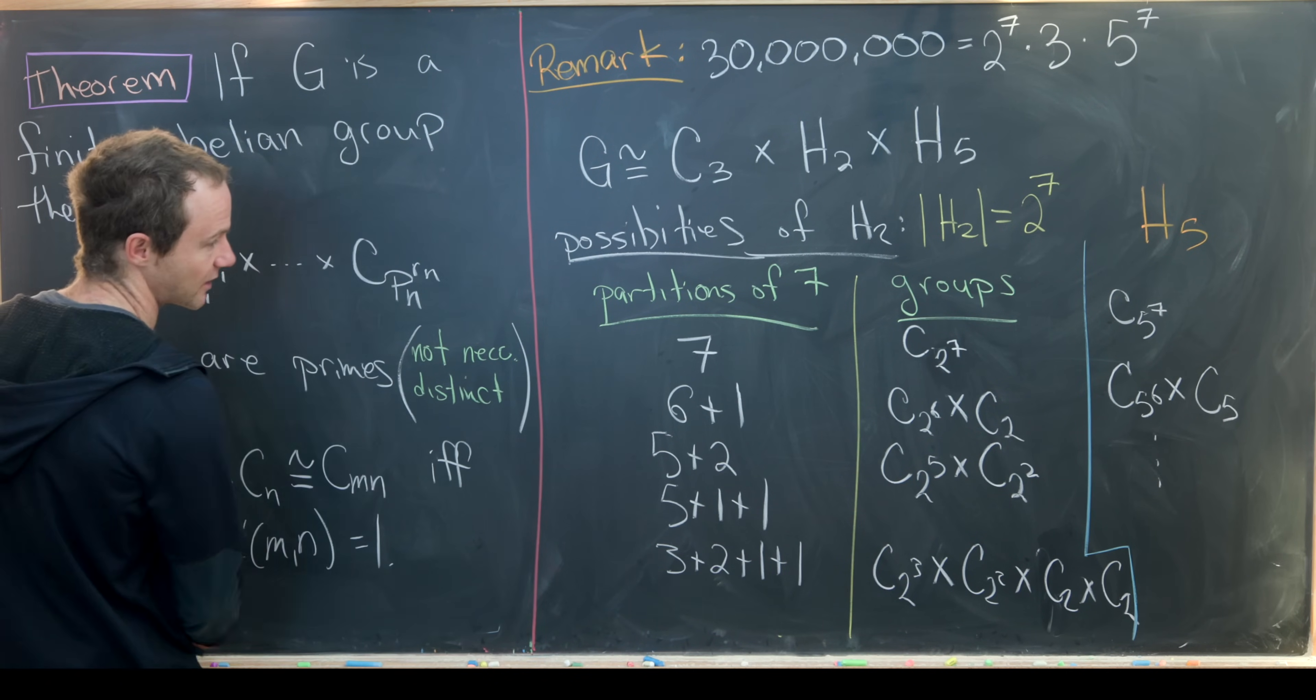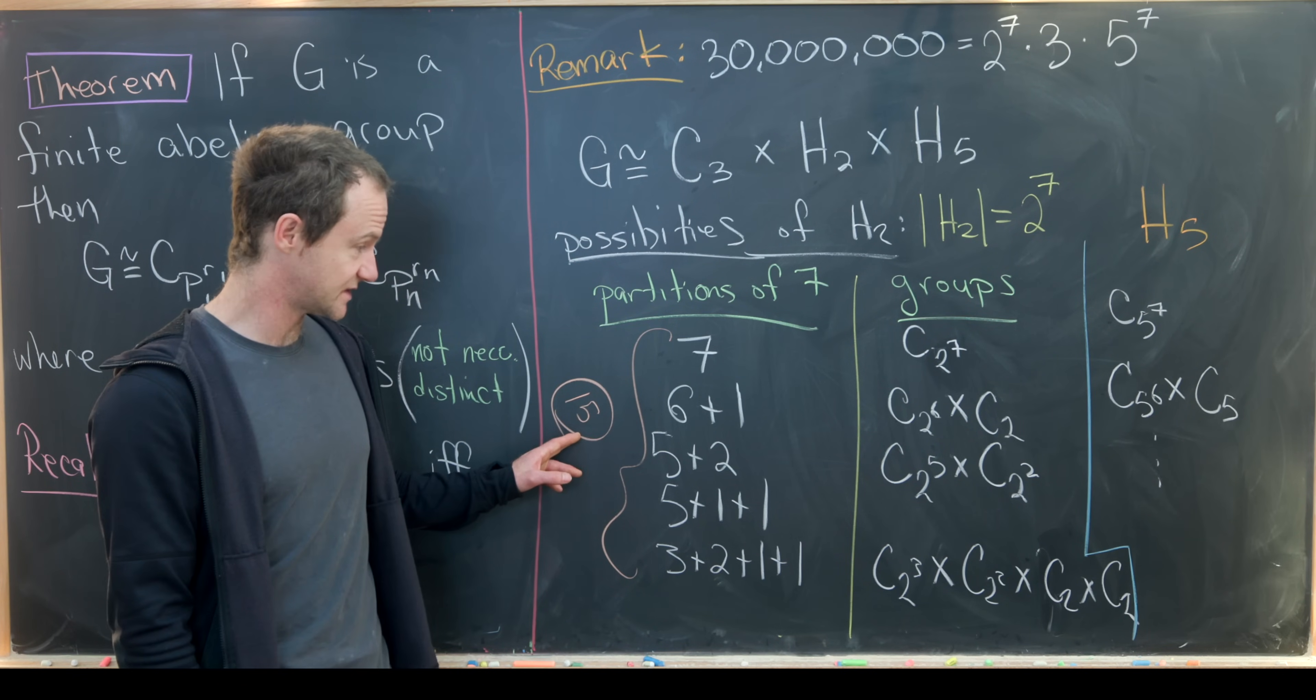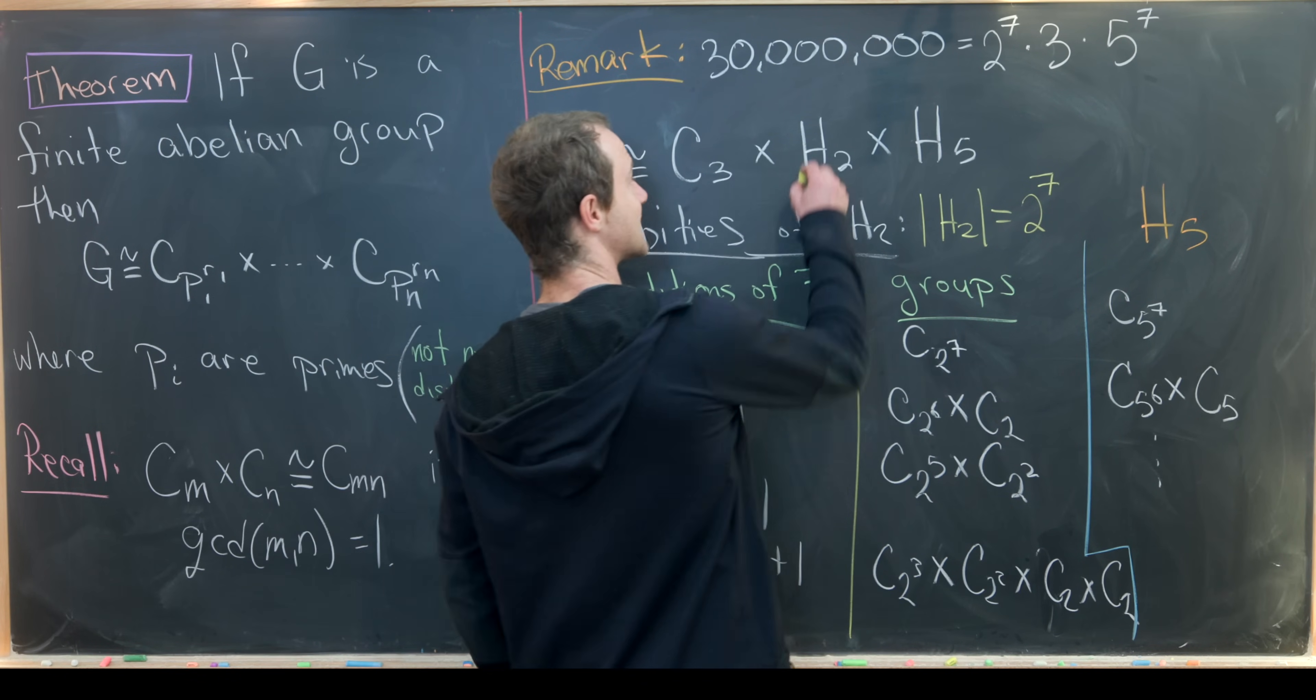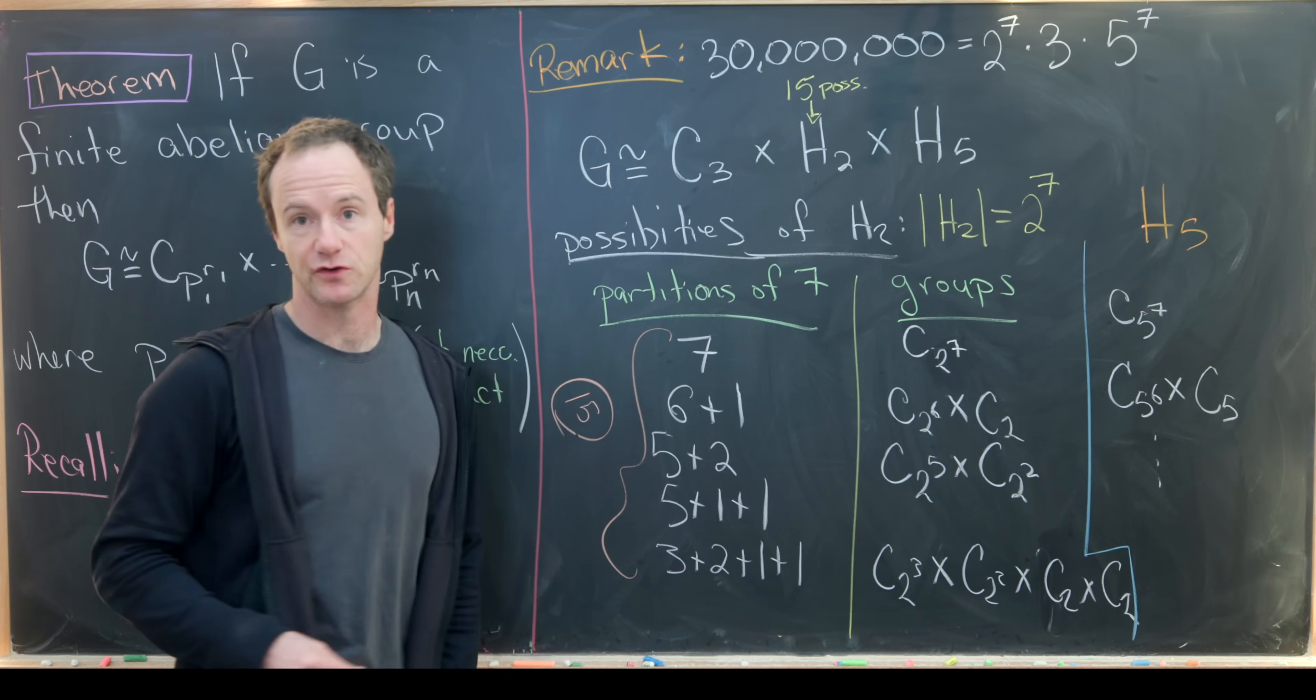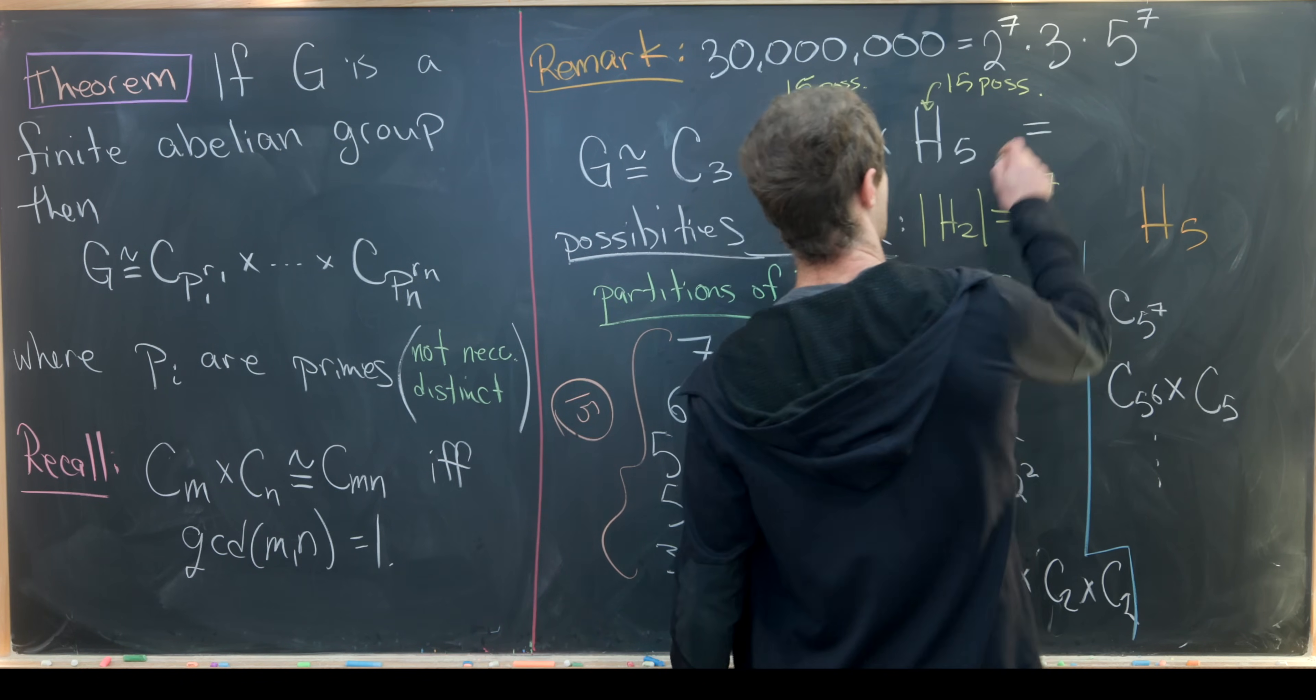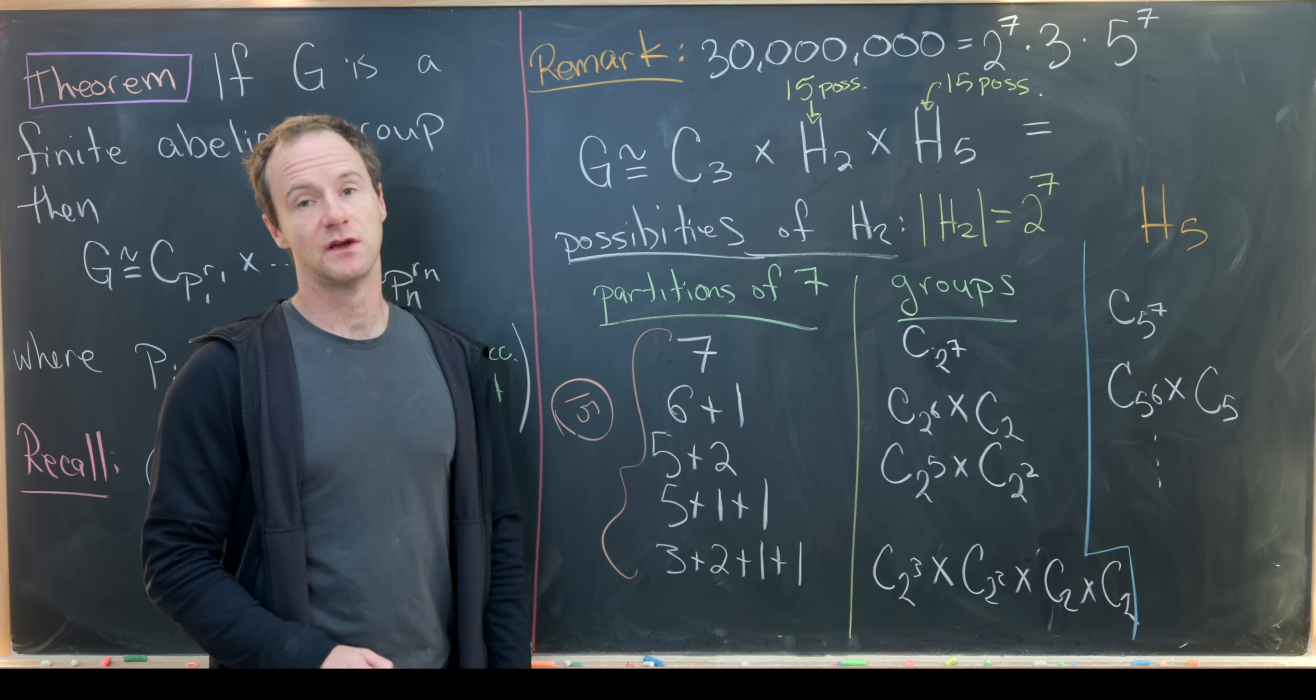I mentioned earlier that in total there are 15 partitions of 7. Each partition gives rise to another group H2, and each partition gives rise to another group H5. But putting that together, there are 15 possibilities for H2 and 15 possibilities for H5. So there are 15 times 15 possible ways to choose these two together. This C3 is forced upon us.